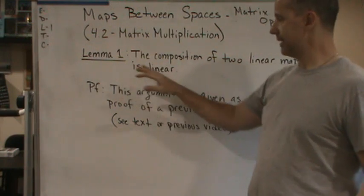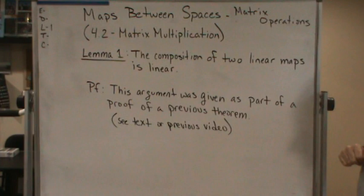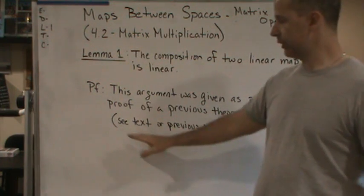So Lemma 1 says the composition of two linear maps is itself linear. Now I'm not going to go over this proof.